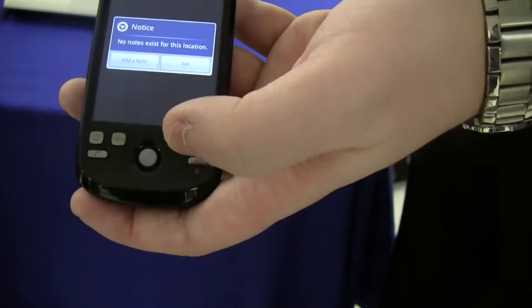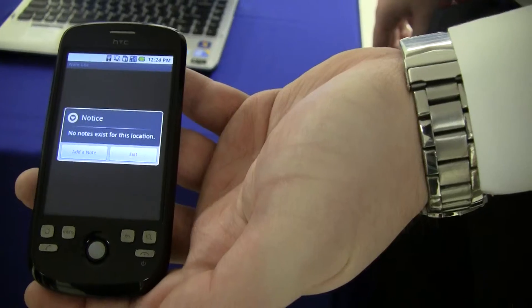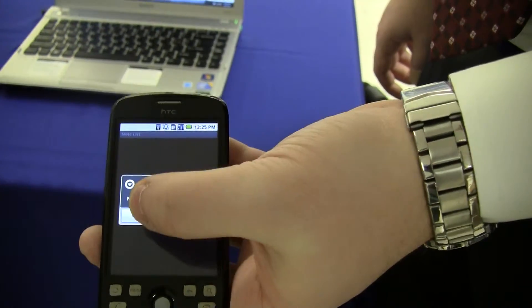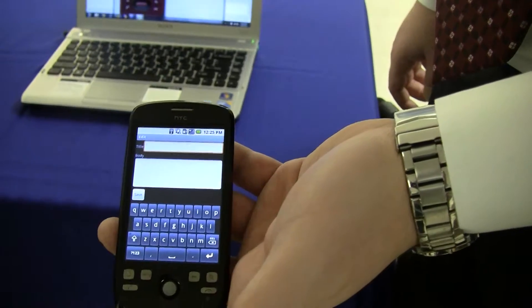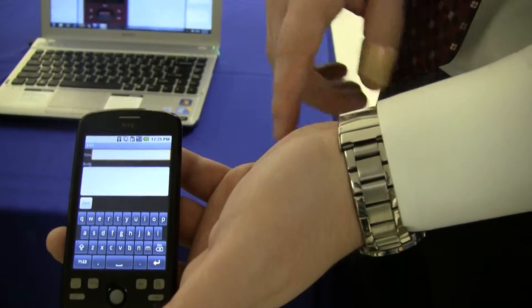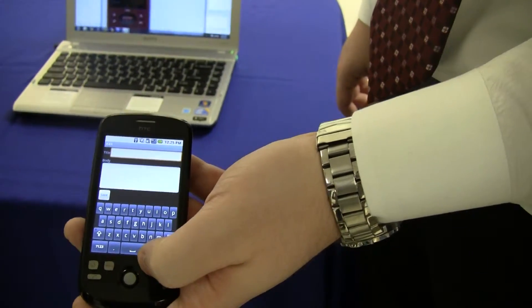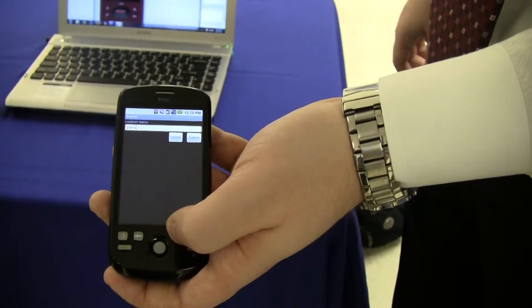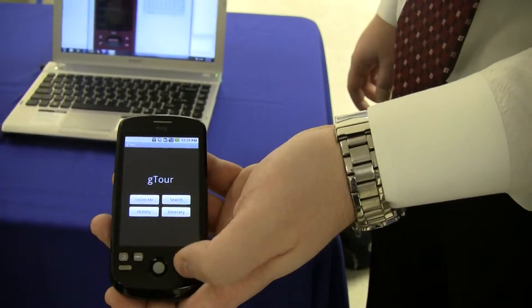I'm going to go to notes as an example. Voice recordings works very much in the same way. We have no notes for this location because it's a new location. So we add a note and we're able to put a title and a body for our note. I'm not going to do that because I don't have to type on this thing again. And that was the search in the article view.